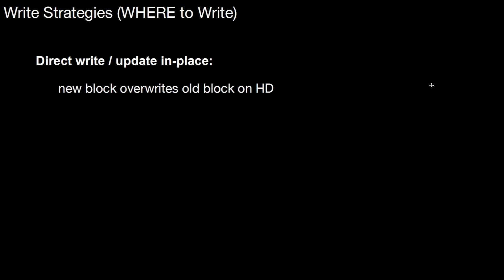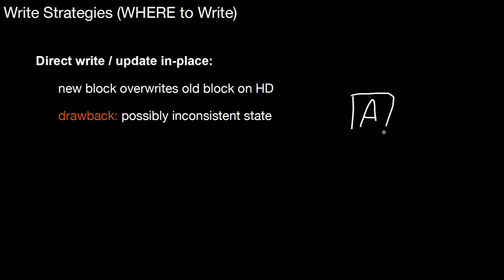In this strategy, the new block overrides the old block on hard disk. This has some problems because we might end up with a possibly inconsistent state. Assume we have a block A on hard disk. We read it into main memory, so now we have a copy in main memory. We modify it and call it A' — a newer version of the block. So we have to write it down again to the hard disk.